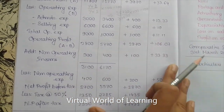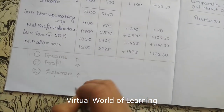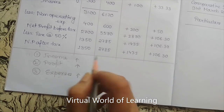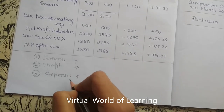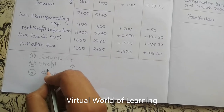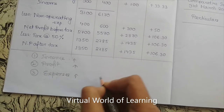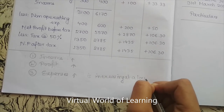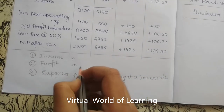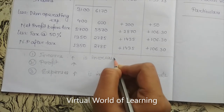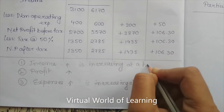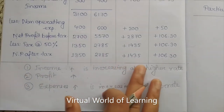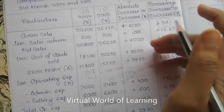For expenses: cost of goods sold is also increasing, total operating expense is also increasing, and non-operating expenses are also increasing. So both income and expenses are increasing. The reason profit can still increase is that expenses are increasing at a lower rate than income. Income is increasing at a higher rate — that is why profit is increasing. We can understand the rates from the percentage increase or decrease column.